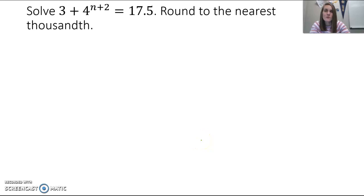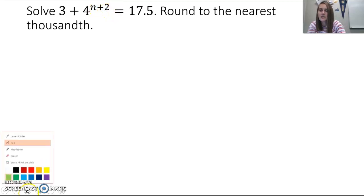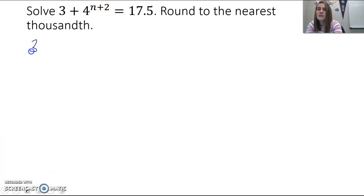Solve the equation 3 plus 4 to the n plus 2 power equals 17.5, round to the nearest thousandth. In this case we're not going to worry about the exact answer, mostly because we have more work after the logarithm when we take care of this n plus 2 in the exponent. We'll get there in a second. Let's look at our equation.